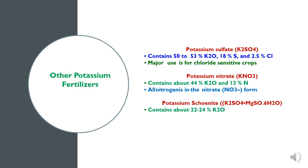Potassium Sulphate contains 50–53% Potassium, 18% Sulphur, and 2.5% Chlorine. This fertilizer is mainly used in chloride sensitive crops.